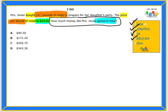Our final step is to solve the problem. We are looking for a total, and it says price per pound, which means we are going to multiply.